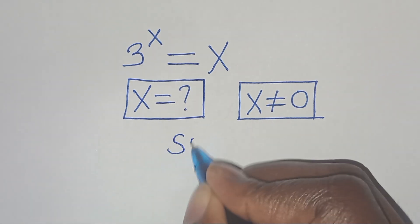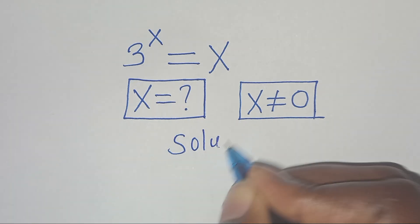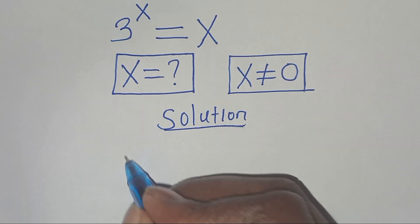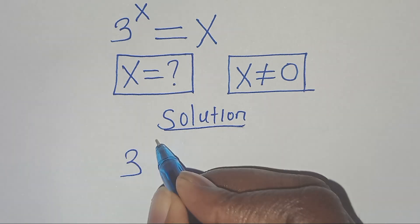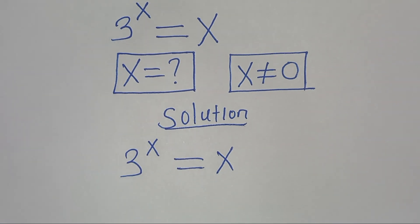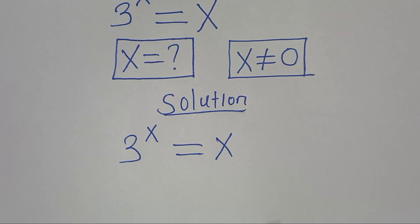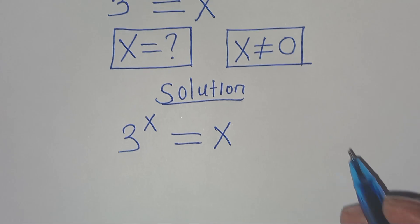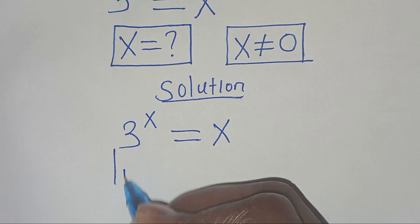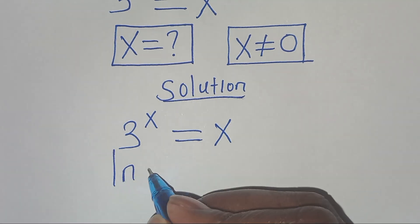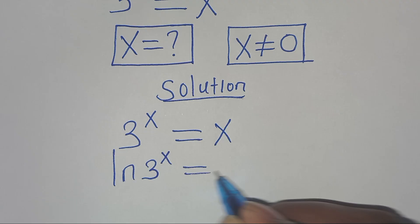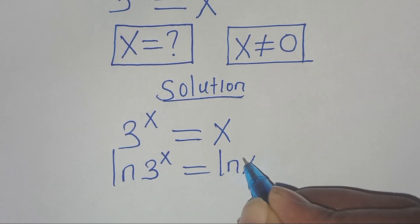Let's present the solution from here. We have 3 to the power of x, this is equal to x. To solve for x here, we introduce the natural log on both sides, so we would have ln of 3 to the power of x, this is equal to ln of x.